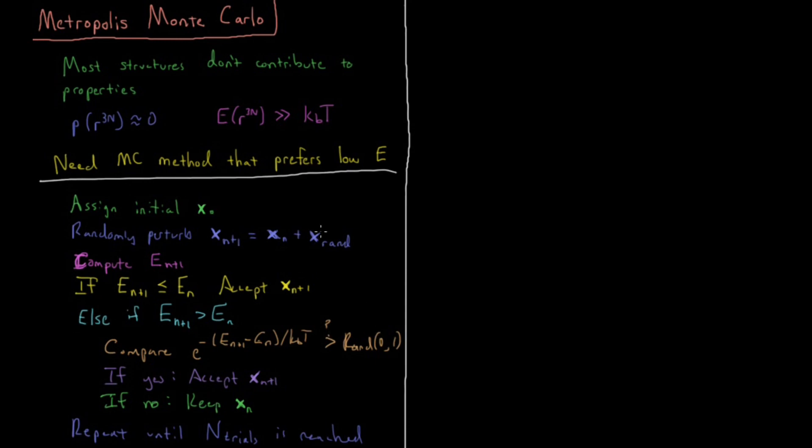The other caveat is the choice for how big this random displacement is. It is random, but we want to control a little bit about how that works. We can adjust the expected magnitude such that around 50% of structures are accepted. If we're accepting too many structures, we're not displacing far enough and not exploring enough configuration space. If we're accepting too few, our displacement is too big and we're getting stuck at the same place too much.